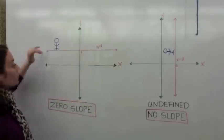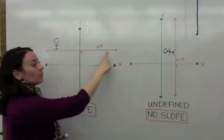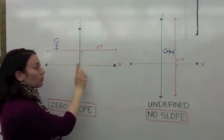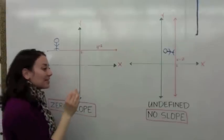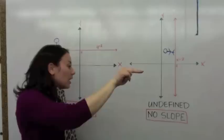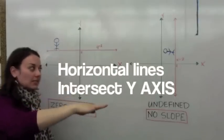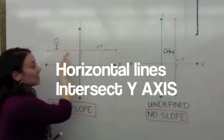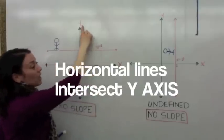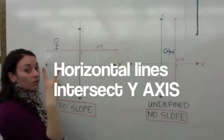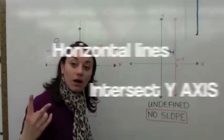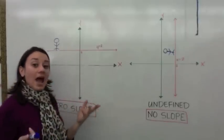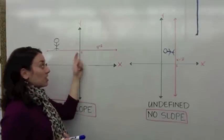What I want you to notice about a line that has zero slope is which axis does it go through? It's not the same as the x-axis, even though the x-axis is also horizontal. But which axis does it intersect? Very good — it goes through the y-axis.